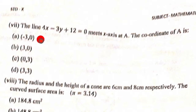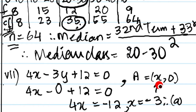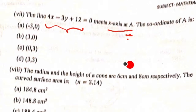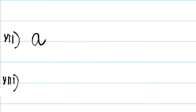Seventh question: The line 4x - 3y + 12 = 0 meets the x-axis at A. A lies on the x-axis, so it is (x, 0). Substituting: 4x - 3(0) + 12 = 0 gives 4x = -12, so x = -3. The coordinates of A are (-3, 0), which is option A.